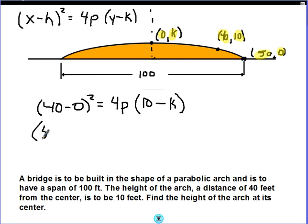So we can say (50 minus h), well h is still 0, squared is equal to 4p times, now the y-value of our point on the parabola is 0, minus k. So what we have here is we have what we call a system of equations. We have two equations, we have two variables, and you'll just solve. We'll clean these up a little bit.